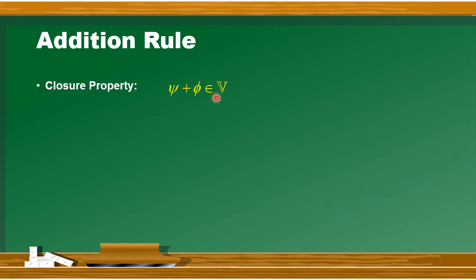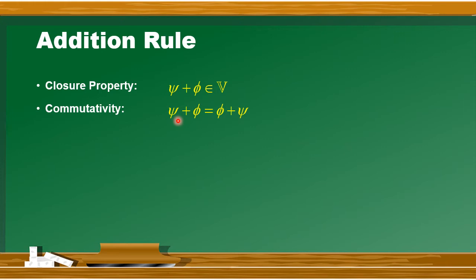इसी तरह another property है commutativity. Commutativity भी इसी तरह apply हो सकती है दो vectors या more vectors पर. तो दो vectors को अगर आप add करें - like psi plus phi - that must be equal to phi plus psi. इस rule में ये बताया जा रहा है कि vectors का order matter नहीं करता है. Means कि आप पहले vector को दूसरे vector में add करें या दूसरे vector को पहले vector में add करें, तो दोनों के result पे कोई effect नहीं होगा.